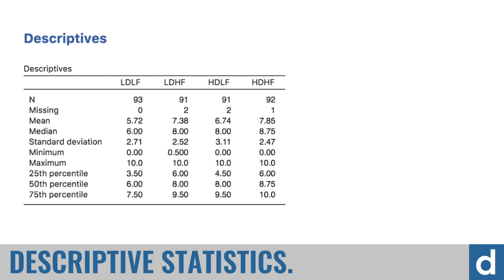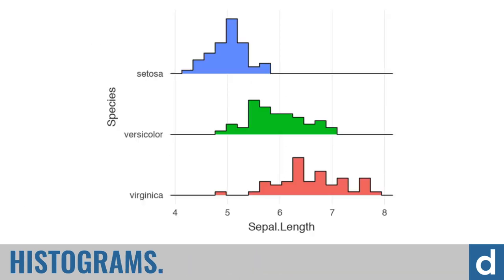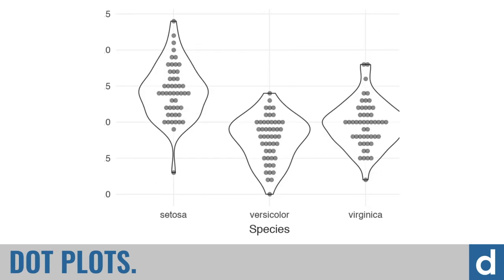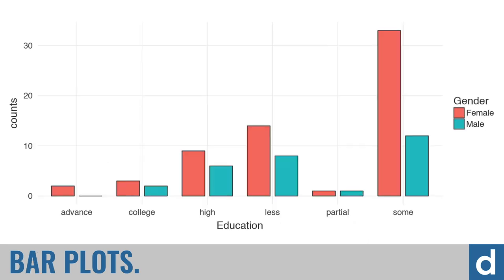Even more useful than that are data visualizations like histograms or density plots, box plots or violin plots, or a dot plot combined with a violin plot. And finally, standard bar plots — one of the most useful methods for visualizing data.